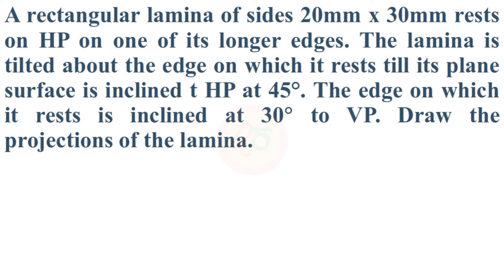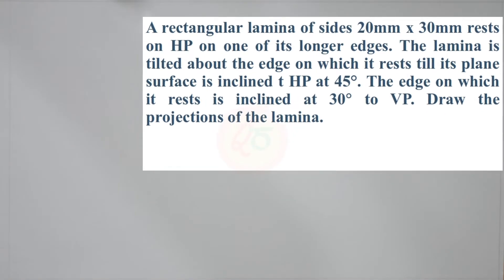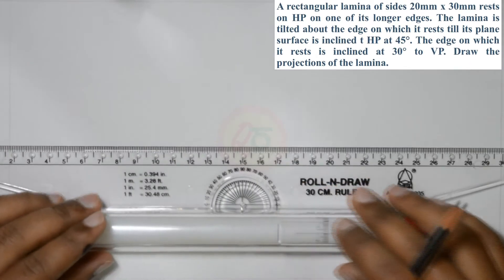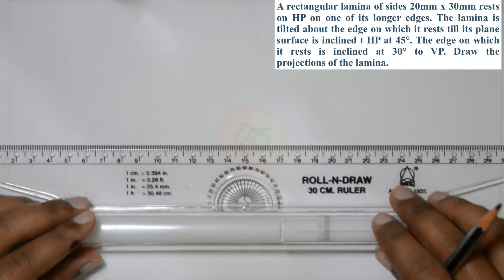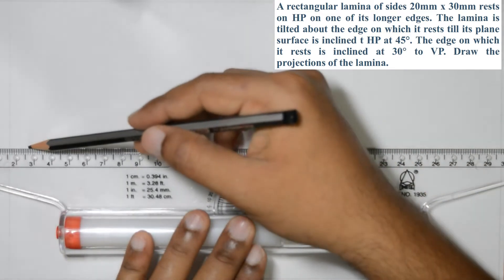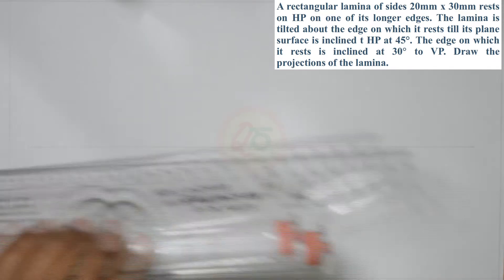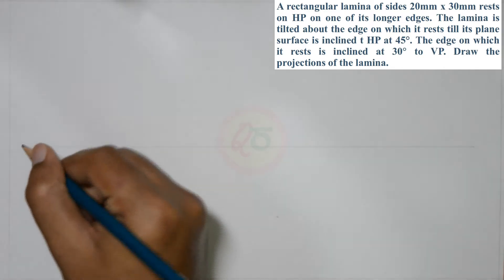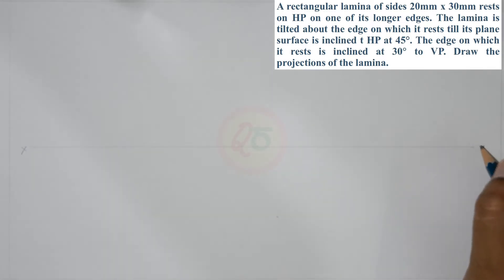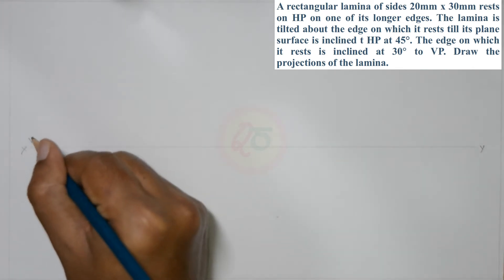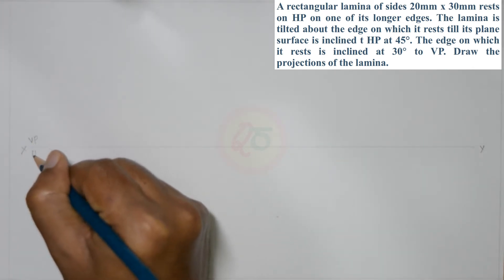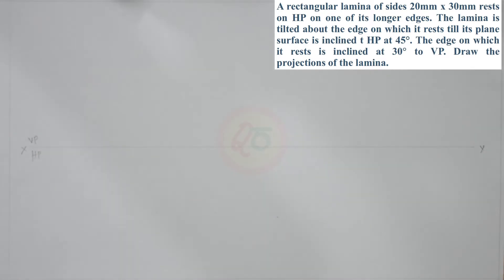This problem is very similar to the previous square problem that we have solved. First, let us write the x-y line using a HB pencil with normal pressure. The vertical plane is on top of the x-y line, and the horizontal plane is below the x-y line, since we are dealing with the first angle of projection.